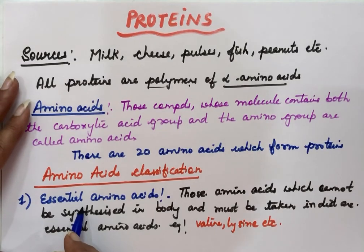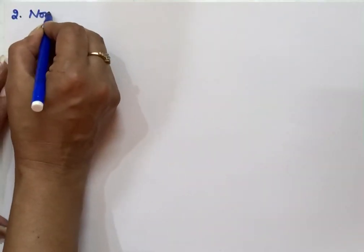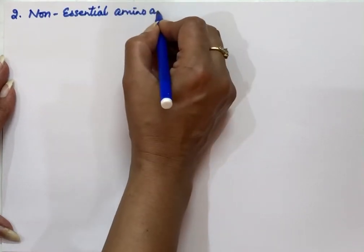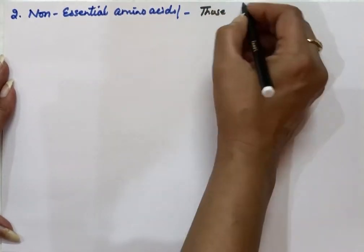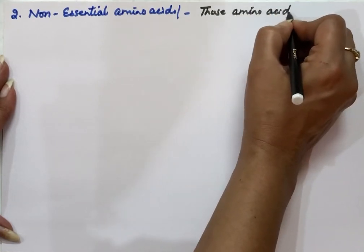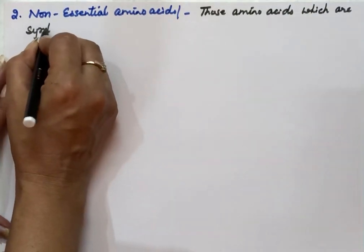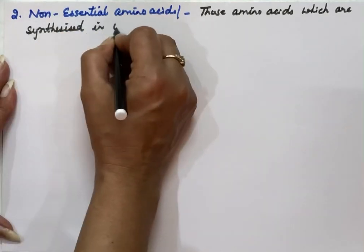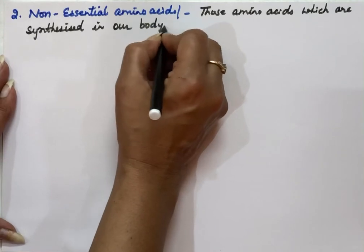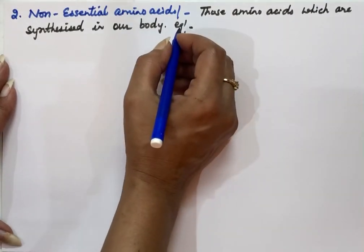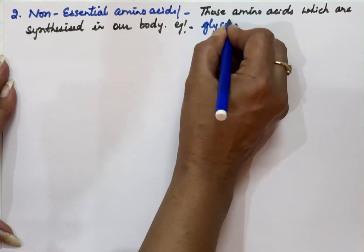The second type of amino acids are called non-essential amino acids. Non-essential amino acids are those which are synthesized in our body — the body can prepare these, so there is no need to take them in our diet. Examples of non-essential amino acids are glycine and alanine.